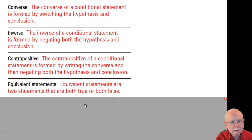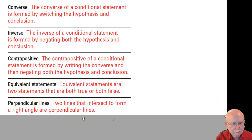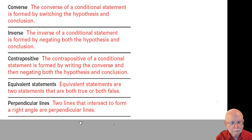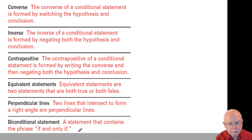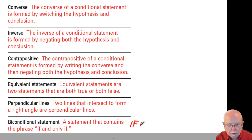Two statements are said to be equivalent if they have the same truth value — in other words, they're both true or both false. Perpendicular lines are two lines that intersect to form a right angle. The biconditional statement is where I take the conditional and its converse, combine them together, and put 'if and only if' in the middle of it. I abbreviate 'if and only if' with IFF.